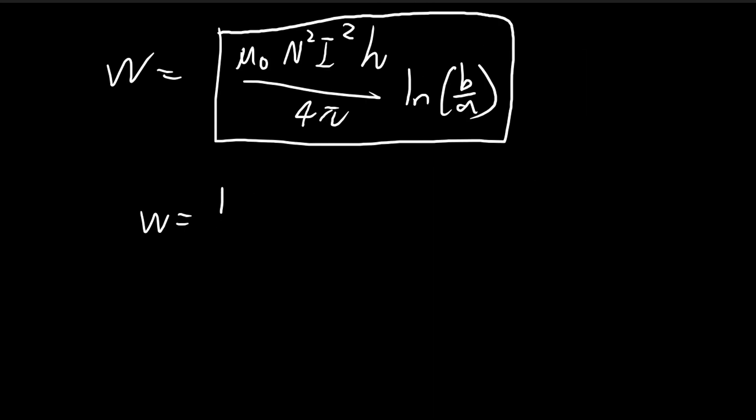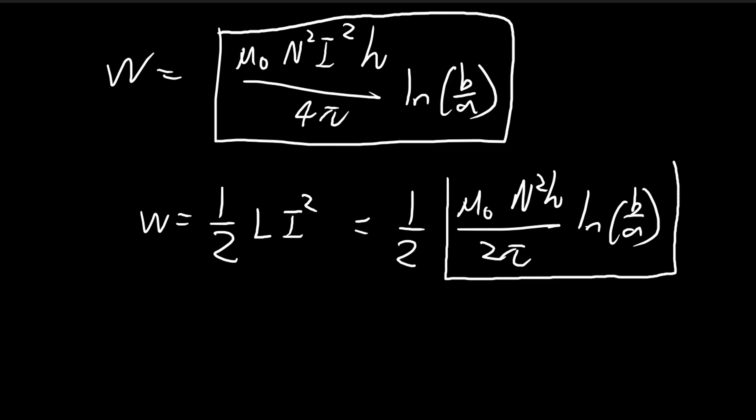Now we need to verify the formula that energy is also given by one-half times the inductance times the current squared. Earlier in the book, they proved the inductance for a toroid is equal to μ₀N²h divided by 2π natural log b over a. This is a result that was proven in the book earlier, so I'm going to use it directly here.